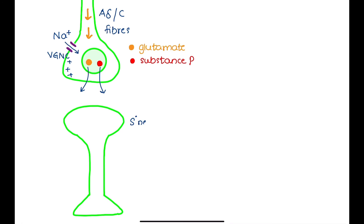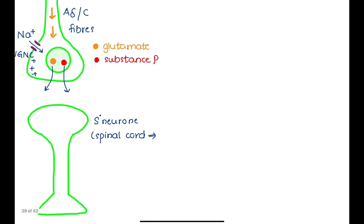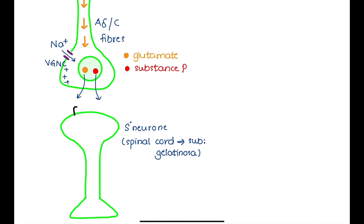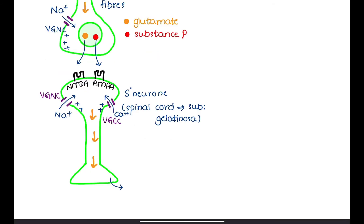These neurons synapse with secondary neurons in the substantia gelatinosa of the dorsal horn of the spinal cord, which have NMDA and AMPA receptors. Binding of neurotransmitters to these receptors leads to opening of voltage-gated sodium channels and voltage-gated calcium channels, causing more and more action potentials to be released. These neurons then cross over to the other side of the spinal cord and ascend to the thalamus as the spinothalamic tract.